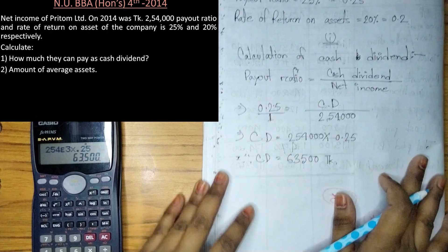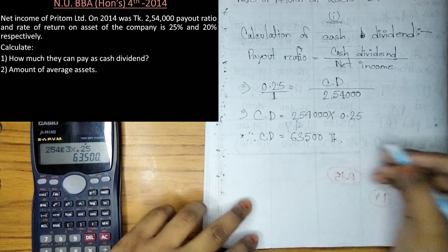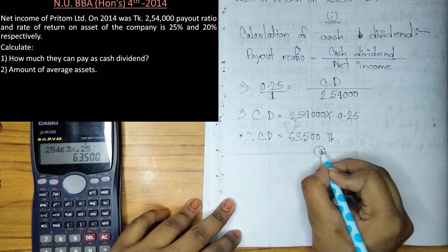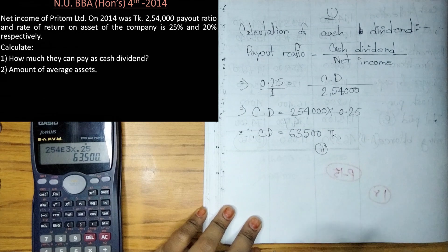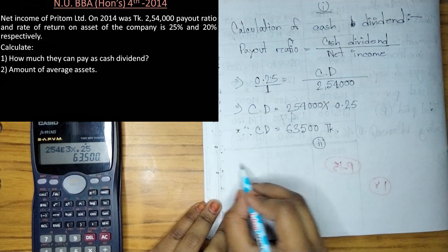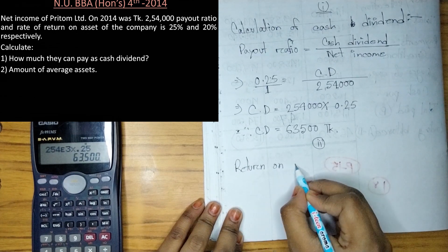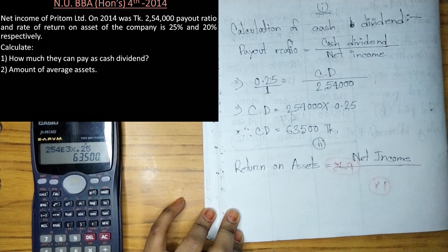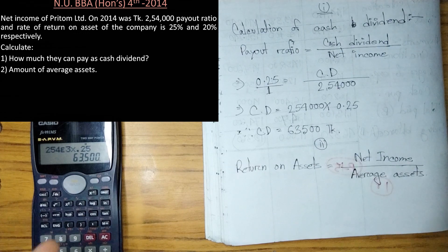Okay, so this is the cash dividend calculation done. Now for the second part, we need to find the average assets. We use the return on assets formula: return on assets equals net income divided by average assets.